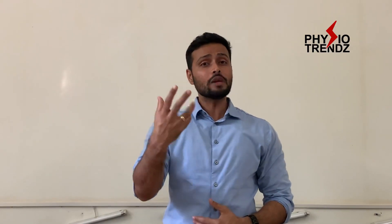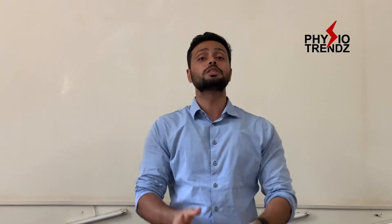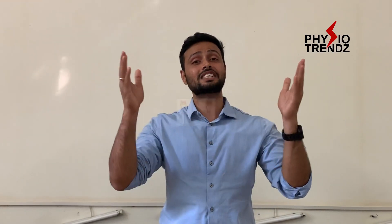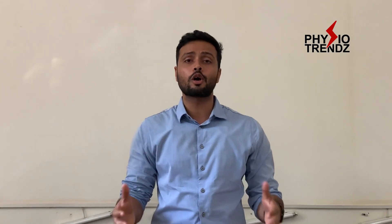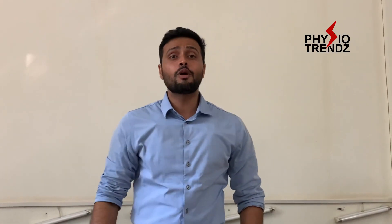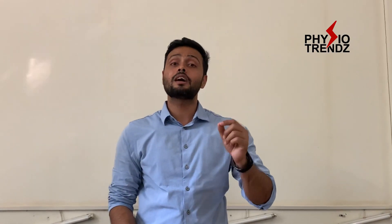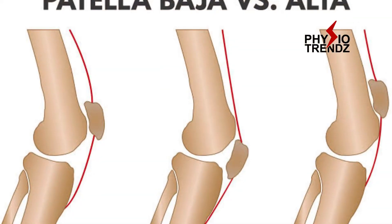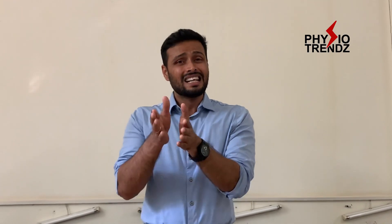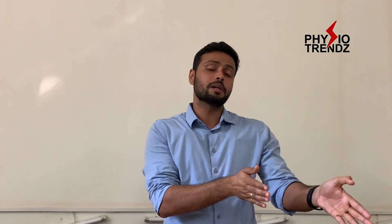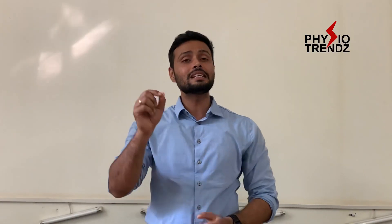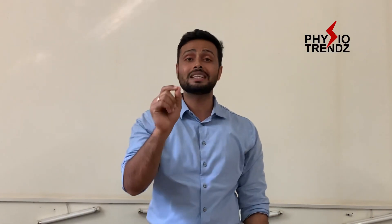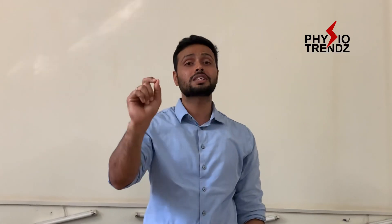When the bone is involved, the first thing we have to do is observe whether there is any structural deformity present. Most of the time it can be bow leg or knock knees. Another structural deformity can be with the patellar position — it can be shifted upward, downward, medial, or lateral. That can also lead to knee pain. If you identify these things, you can easily conclude what is exactly causing the patient's knee pain.